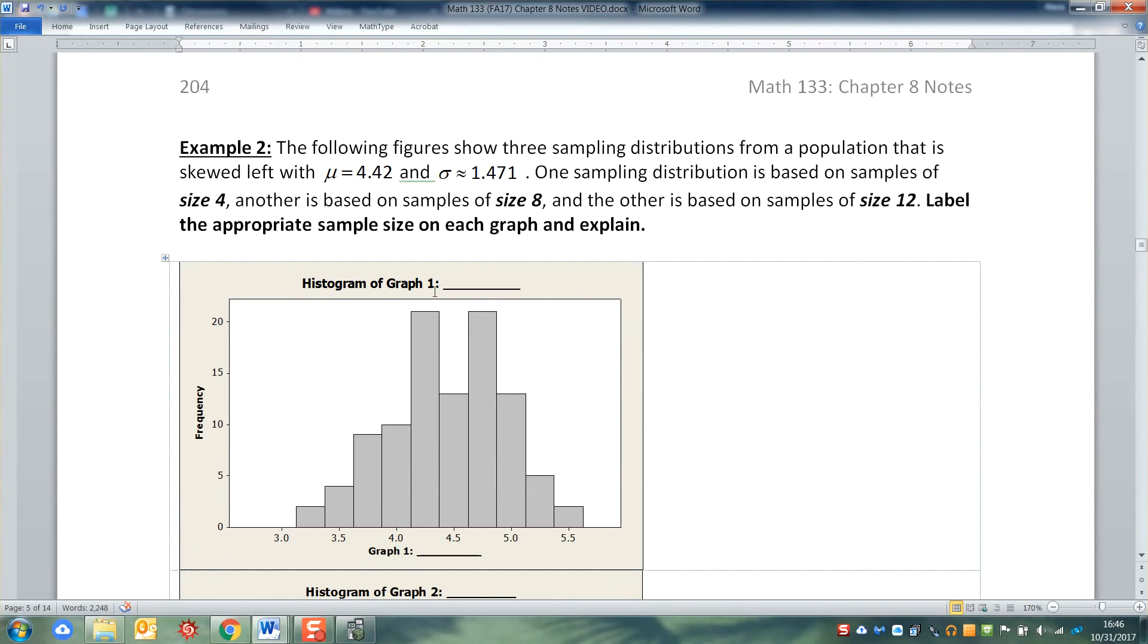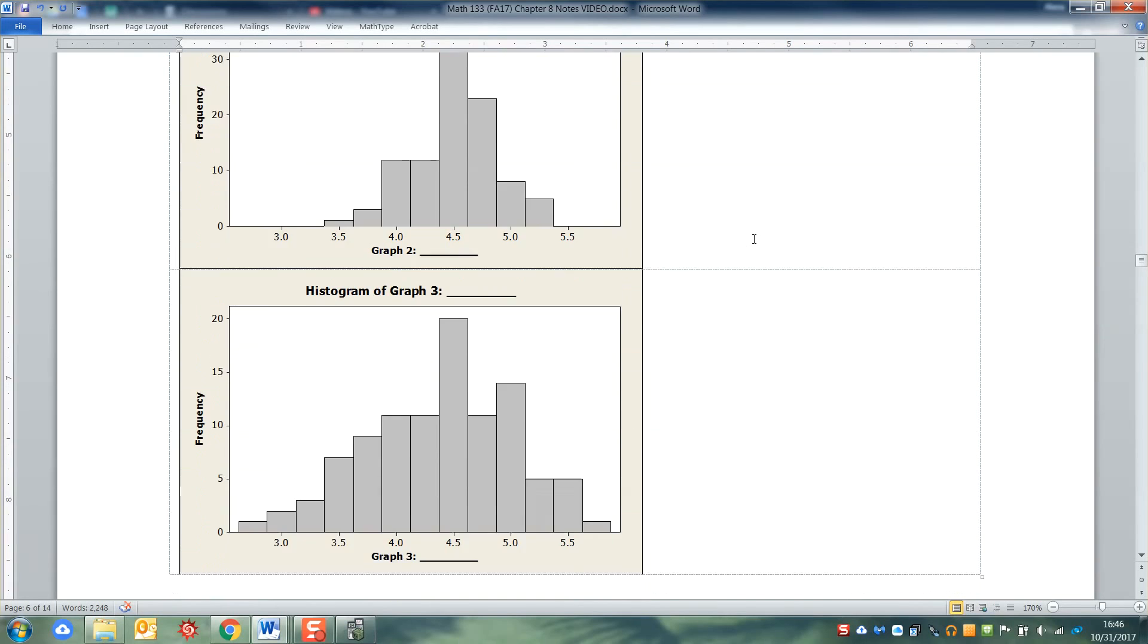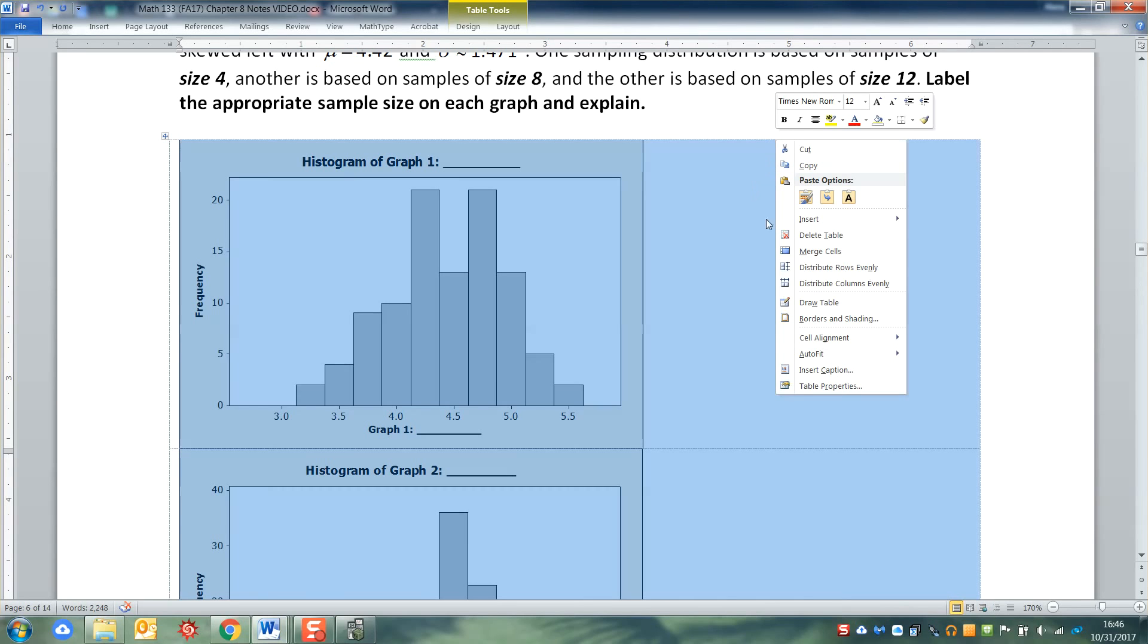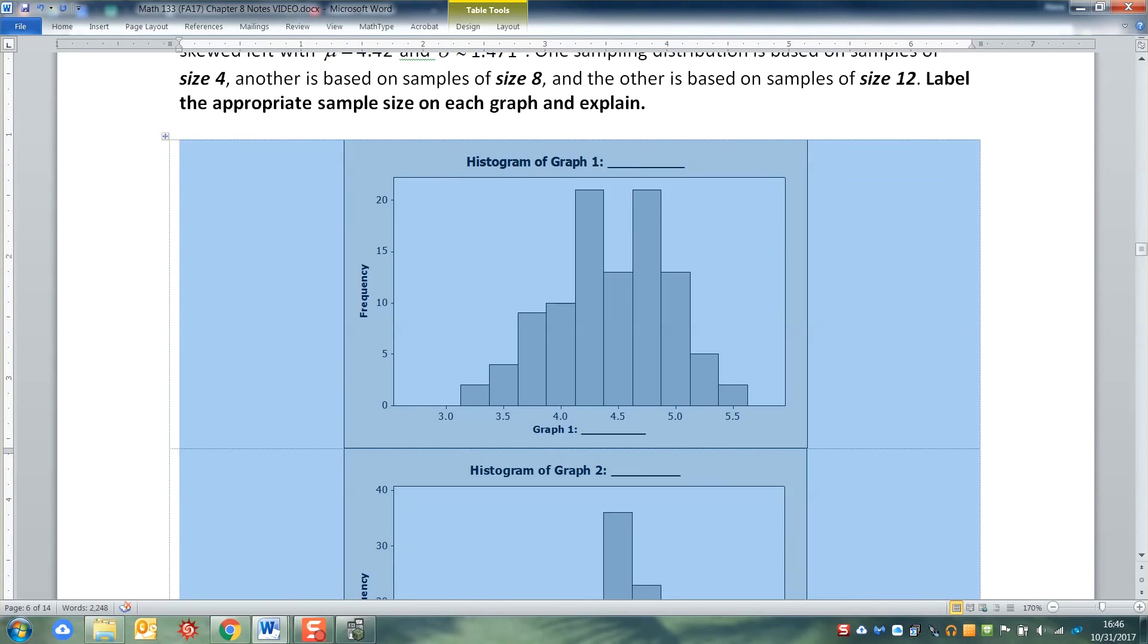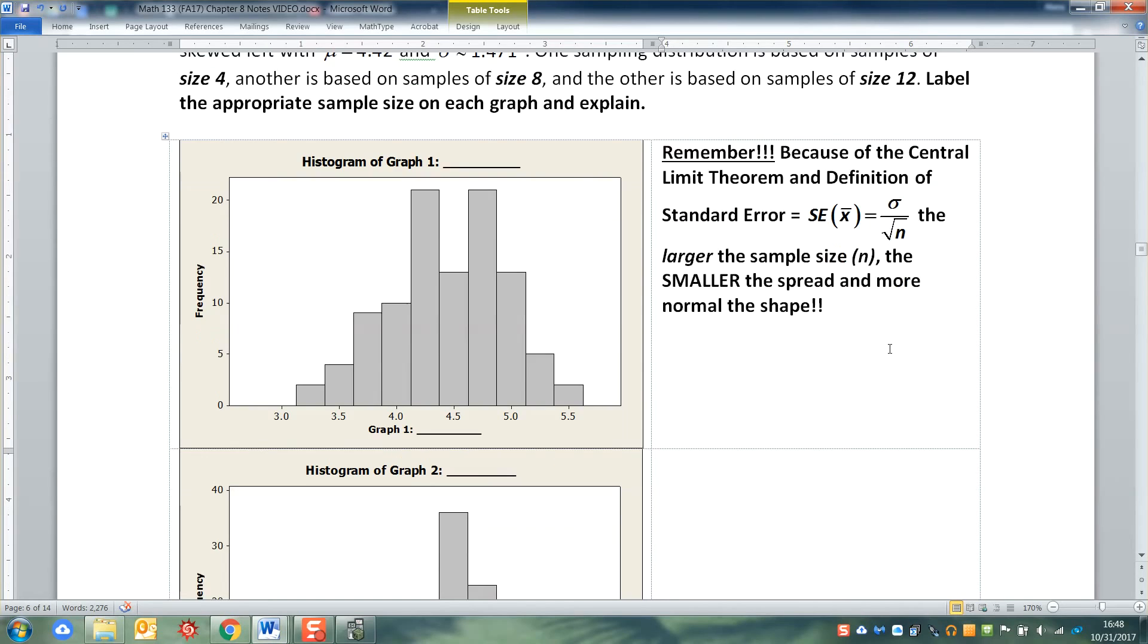Now let's move on to the next one. So the following figures show three sampling distributions from a population that is skewed left with μ = 4.42 and σ = 1.4712. So our mission is to figure out which distribution is a sample size of four, which one's a sample size of eight, and which one's a sample size of 12. So we look at the three. Remember that the larger the n, the larger the sample size, the less spread you're going to have. So let me write that up.